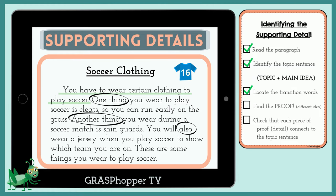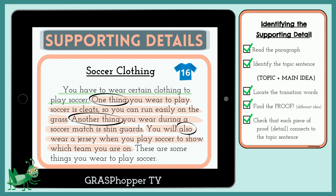Next, we find the transition words. It's time to find the proof! These sentences might be our supporting details. We check each one to make sure it's new information that connects to the topic sentence. One thing you wear to play soccer is cleats — this is a supporting detail since it's an example of the topic sentence. Another thing you wear during a soccer match is shin guards — this is a new example, so it's a supporting detail. You will also wear a jersey when you play soccer to show which team you are on — this is also a supporting detail since it's a new example. This paragraph has three supporting details that prove you must wear certain clothing to play soccer.